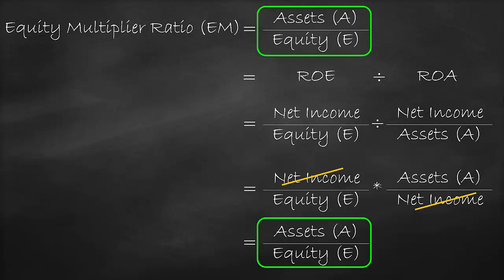Therefore, we can express the equity multiplier ratio as the return on equity divided by the return on assets.